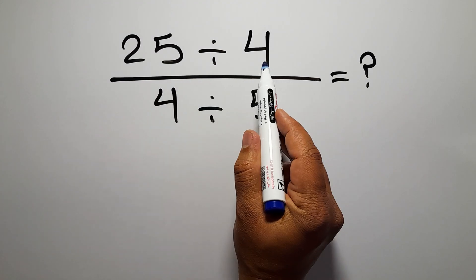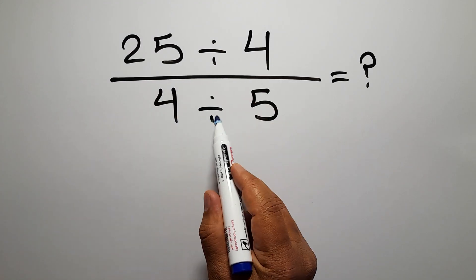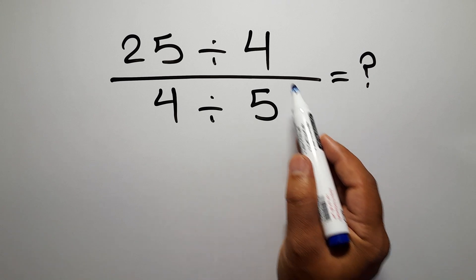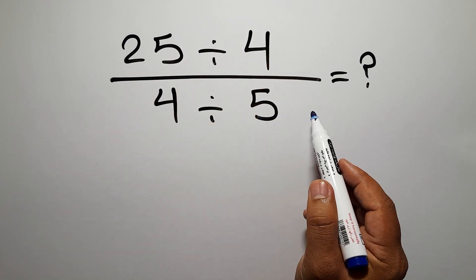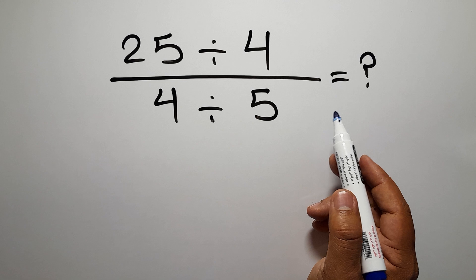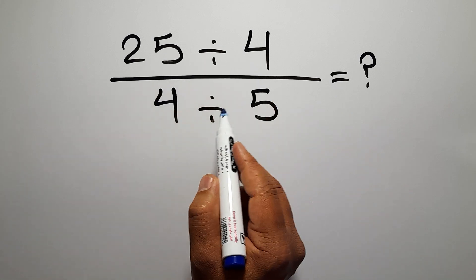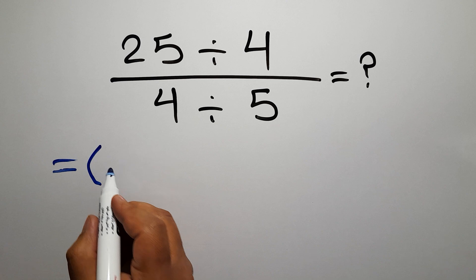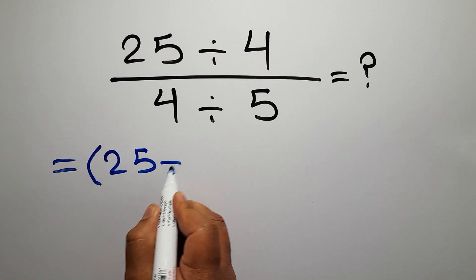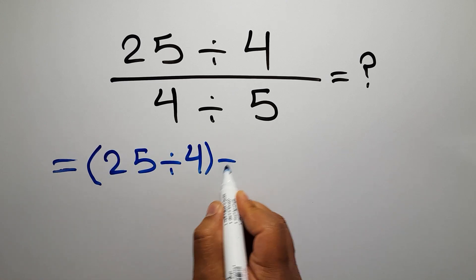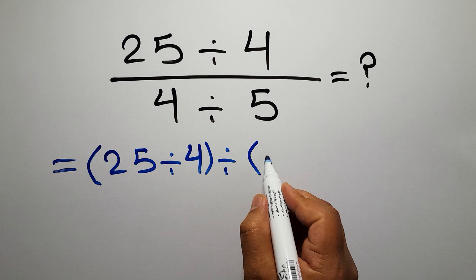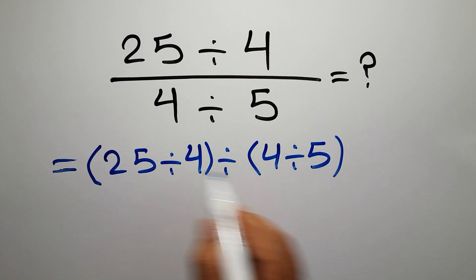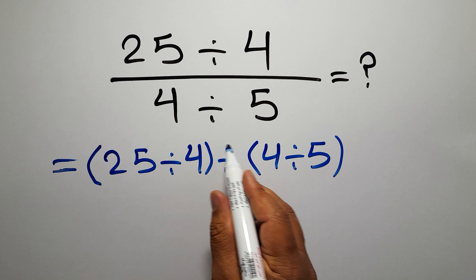25 divided by 4, over 4 divided by 5. Our goal is to find the value of this fraction. To start, instead of this fraction we can write parentheses: the numerator 25 divided by 4, divided by the denominator 4 divided by 5. Now we have two parentheses and one division.